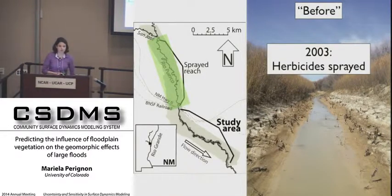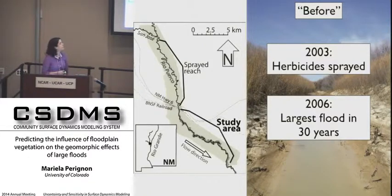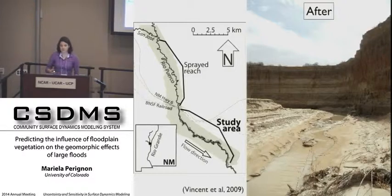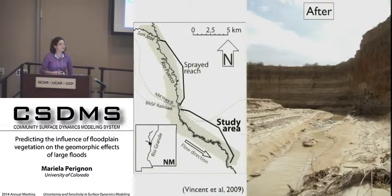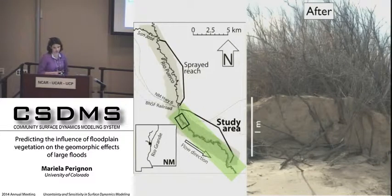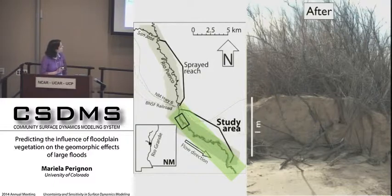Because tamarisk is invasive, in 2003 the local government came in and sprayed herbicides on 12 kilometers of the river and killed everything — both willow and tamarisk. Then in 2006, there was a big flood. The area that was sprayed saw extreme erosion, with the channel locally doubling in width and the back walls of the arroyo in places migrating up to 20 meters. All of that sediment then moved downstream and deposited on the downstream reaches where vegetation was still preserved. That's a tamarisk, and all of that is new sediment from that one event.